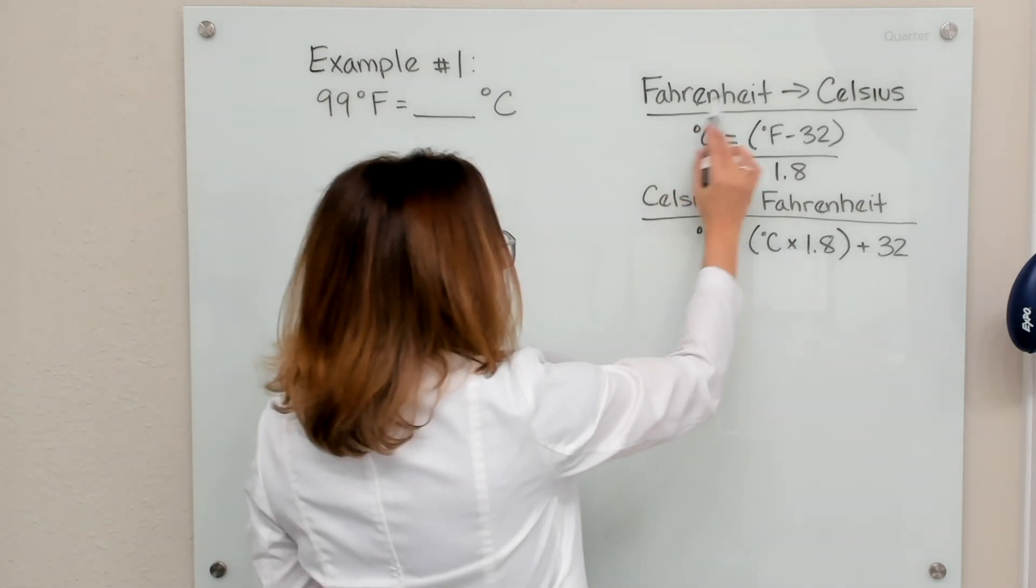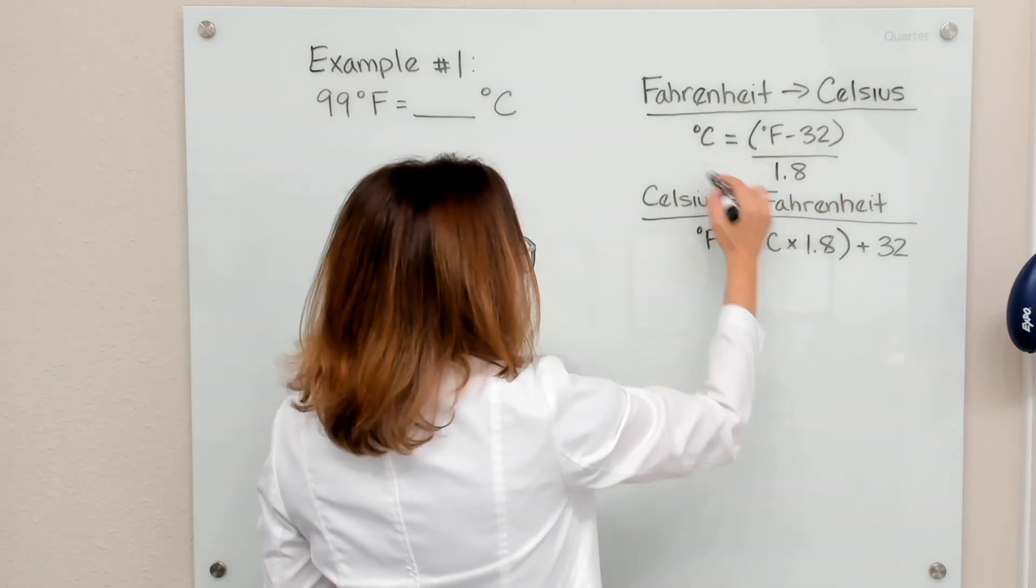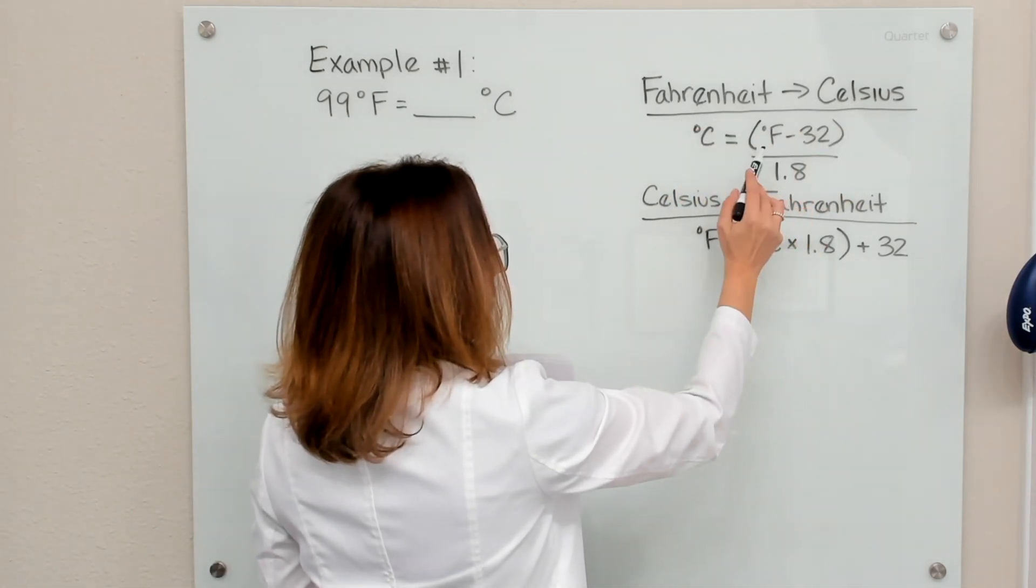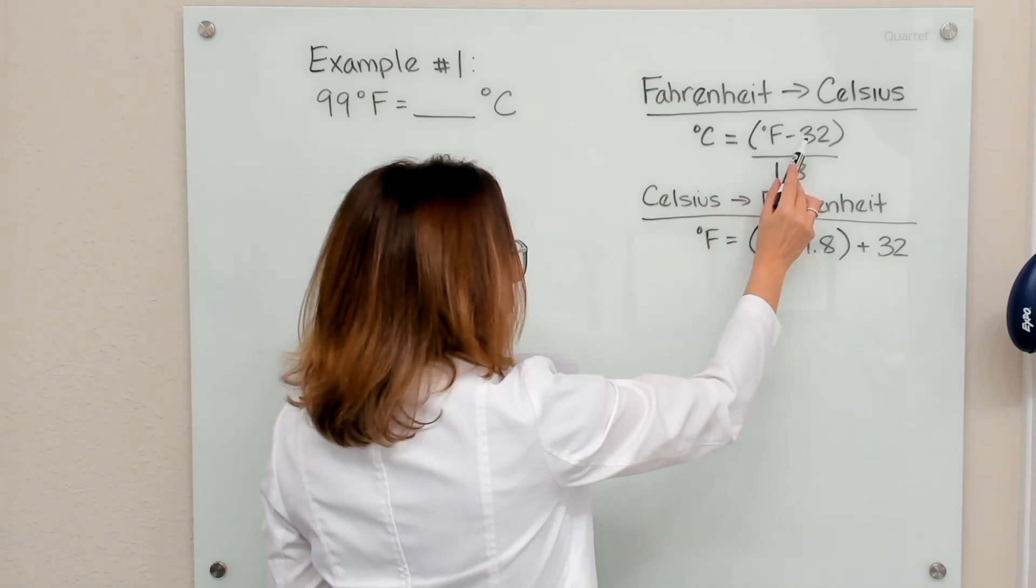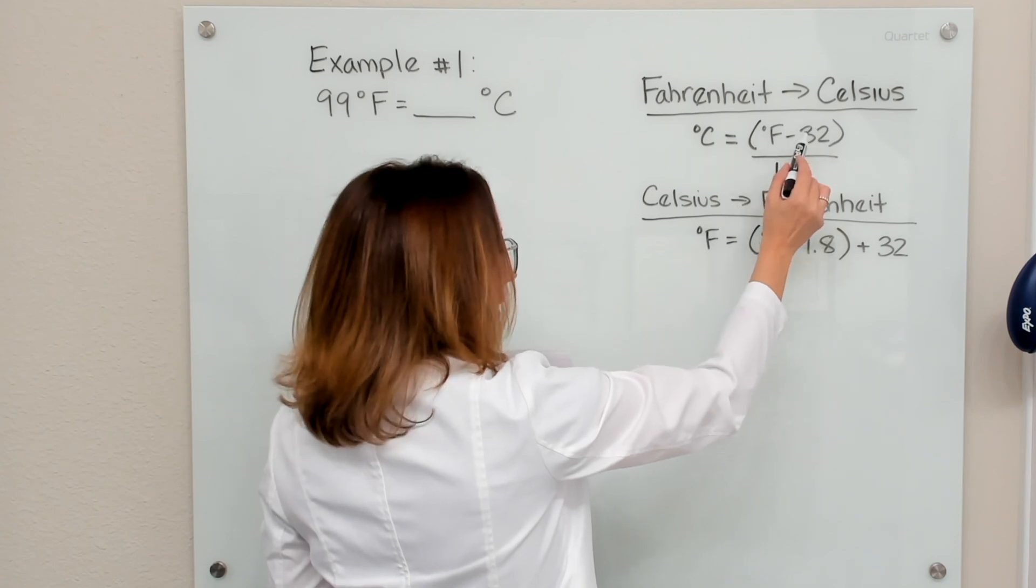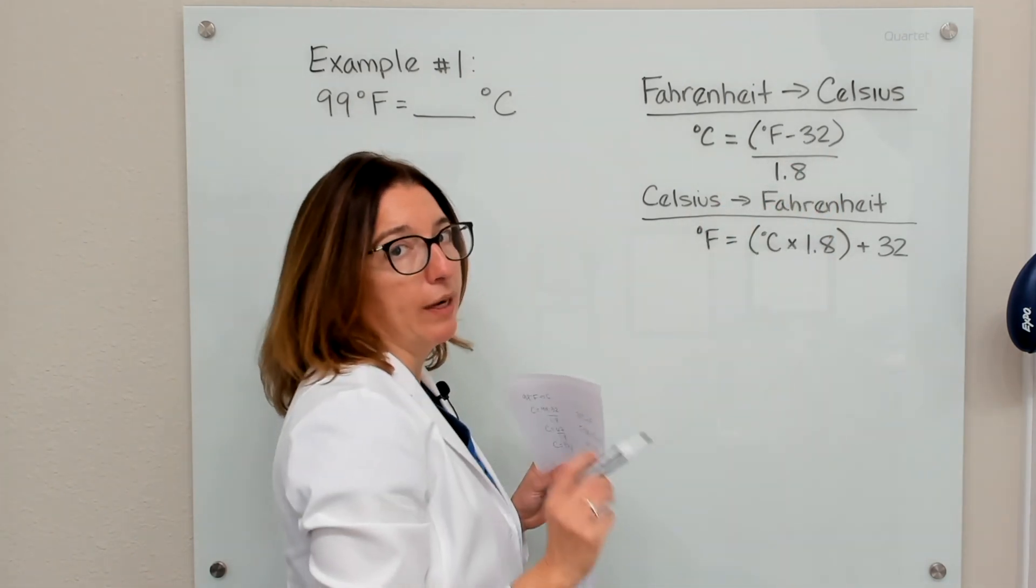So when we're going from Fahrenheit to Celsius, this is the equation you want to use: you want to take your temperature in Fahrenheit, subtract 32, and calculate that, and then take that answer and divide by 1.8.